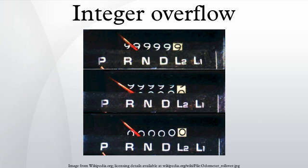The register width of a processor determines the range of values that can be represented. Typical binary register widths include 8 bits, 16 bits, 32 bits, 64 bits, and 128 bits, each with a corresponding maximum representable value. Since an arithmetic operation may produce a result larger than the maximum representable value, a potential error condition may result.